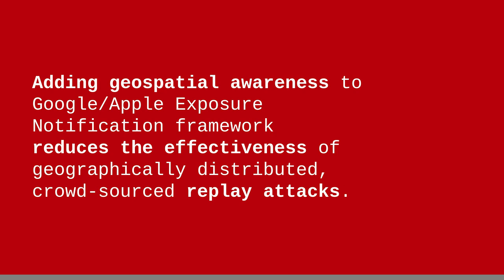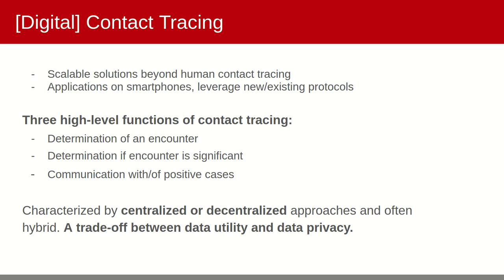First, a bit of background on contact tracing and motivation for our research. Digital contact tracing aims to be a scalable solution beyond manual human contact tracing. It is often implemented as applications for smartphones that leverage both new and existing protocols. The three high-level functions of contact tracing aim to determine encounters with others, whether or not it is epidemiologically significant, and to communicate the encounter particularly if someone tests positive. These functions can be effectively characterized by centralized or decentralized approaches, though most are some sort of hybrid that balance a trade-off between data utility and data privacy.